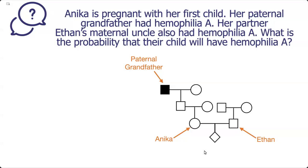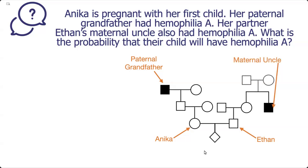On Ethan's side, these are his parents, and it says his maternal uncle had hemophilia A — that means his uncle on his mom's side. He shows the trait, so he's shown with a black square. These are Ethan's grandparents.